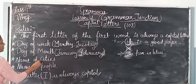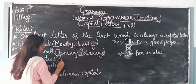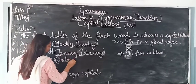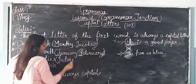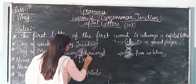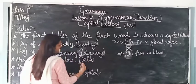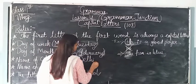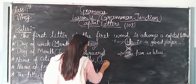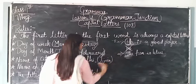Names of cities also start with a capital letter. For example, Indore — I is capital. Delhi — D is capital. Ujjain — U is capital.